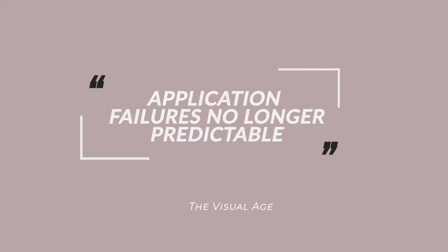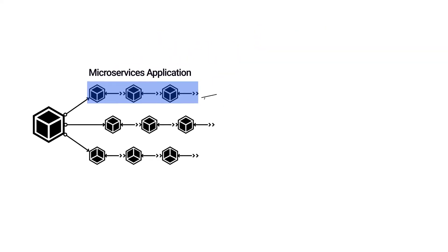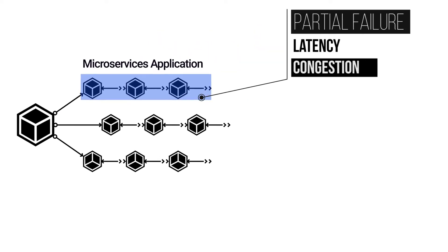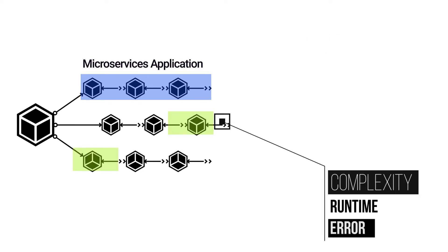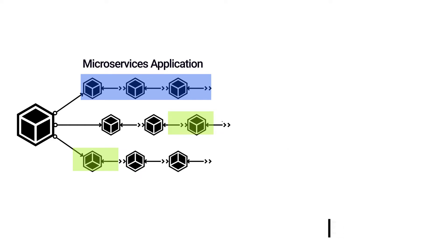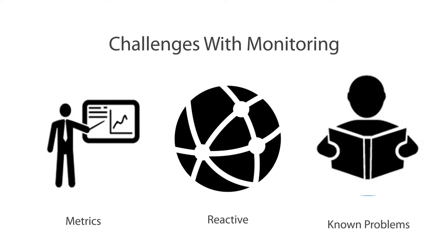The major issue we see today is that application failures are no longer predictable and dynamic systems can fail in very creative ways that are challenging existing practices. Nowadays we have a lot of partial failures that can happen in a variety of places and location types. These partial failures are not only unexpected and out of the blue, but these new failure types are not known or ever seen before.